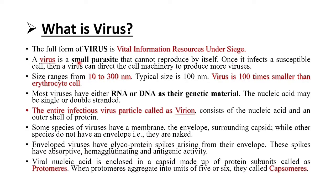A virus is a small parasite that cannot reproduce by itself. Once it infects a susceptible cell, a virus can direct the cell machinery to produce more viruses. The virus size ranges from 10 to 300 nanometers. The typical size of a virus is 100 nanometers. Virus is 100 times smaller than erythrocyte cells.